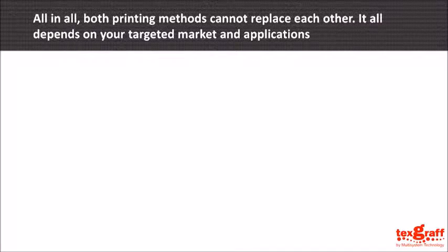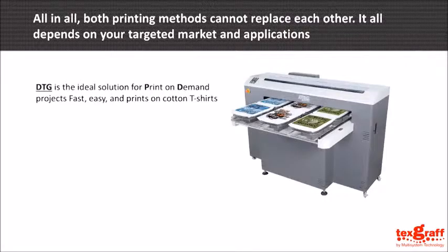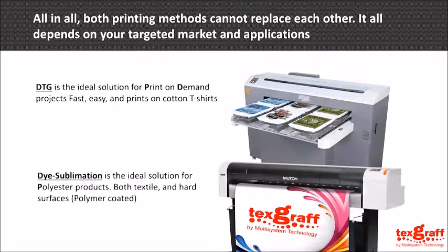To conclude, both printing methods cannot replace each other. As stated from the beginning of the presentation, it actually depends on your targeted market and applications in your business model. DTG is the ideal solution for printing on-demand projects or customer designs, making it fast, easy, and able to print on cotton t-shirts. On the other hand, dye sublimation is the ideal solution for polyester and polymer-coated products.